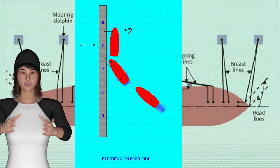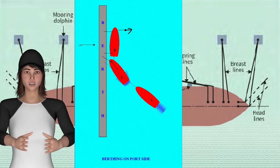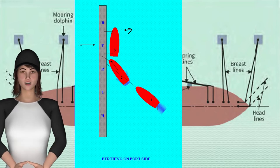Headlines with messenger passed when bow is close in. A stern line is also passed when stern is close to berth.